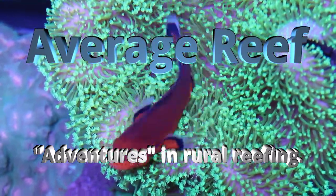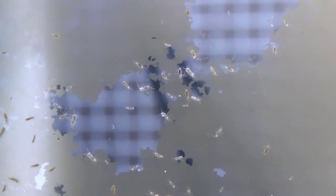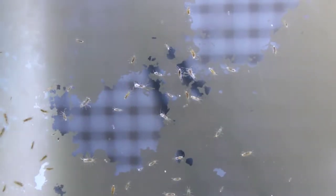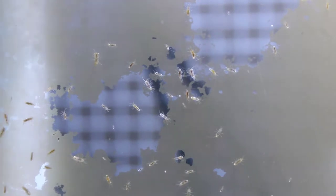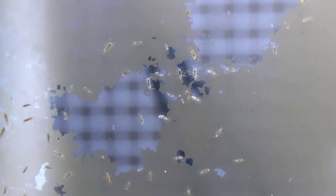This is a quick look at munid isopods in my 55 gallon frag tank. To be honest, I always thought these were a type of amphipod, but when I went to ID them I found out they are in fact isopods.